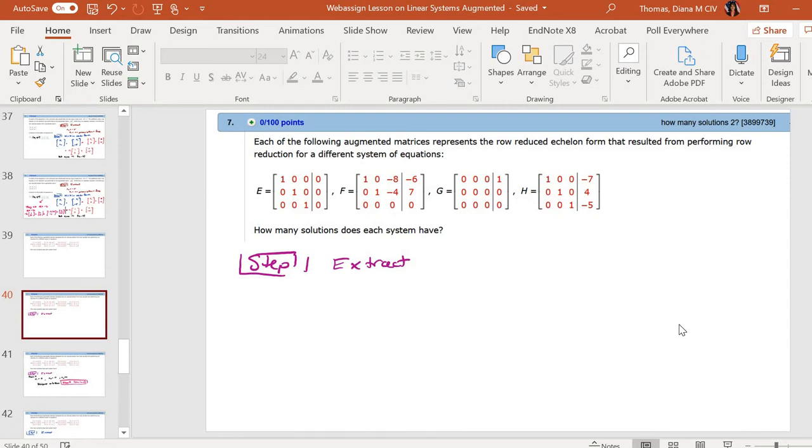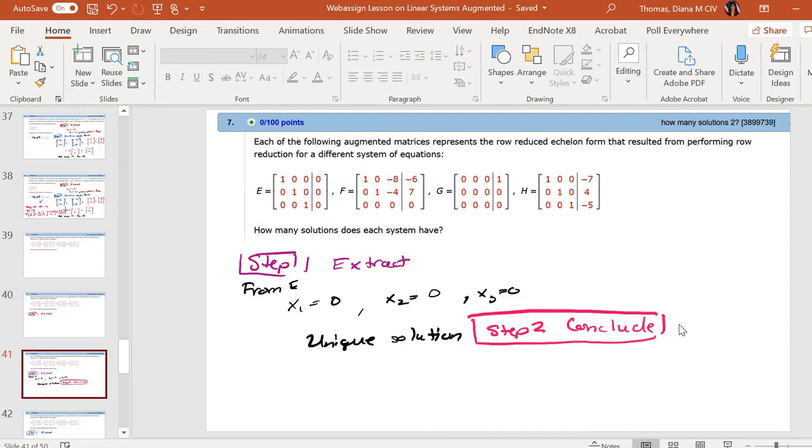Extract. Let's take the e and extract. The first one gives you x1 plus 0x2 plus 0x3 is equal to 0. x2 is 0 on the second one, and x3 is 0 on the third one. So I can conclude that there's only one simultaneous solution.